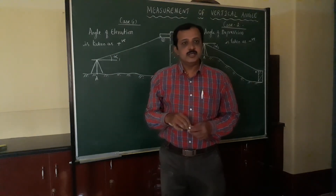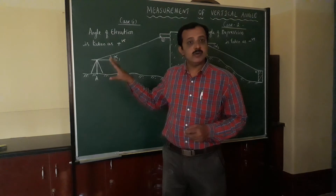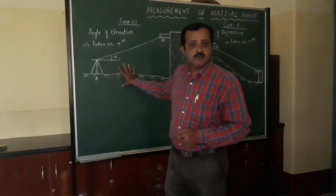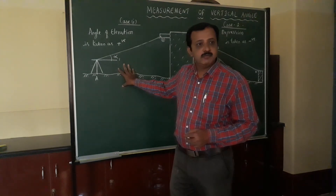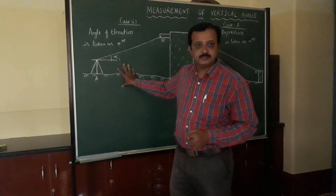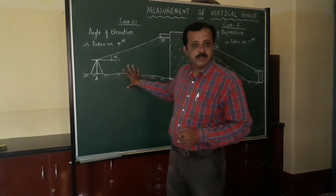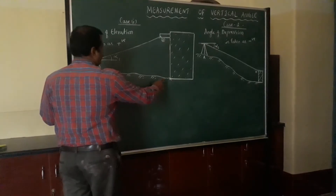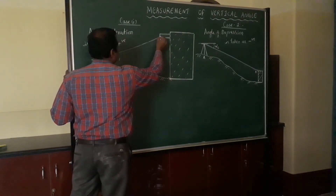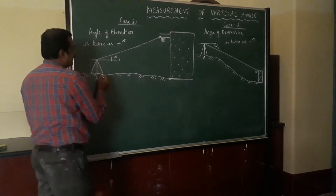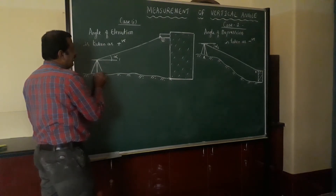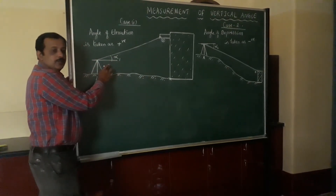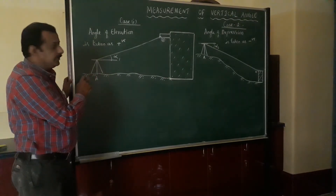In today's class, we will be discussing how to measure vertical angles using the transit theodolite. First, I will explain the method of finding out the vertical angle, and then we will go to the field and perform the experiment. The problem is: given a building, with the top and bottom of the structure visible, I want to find the vertical angle alpha 1 between station point A and point B.